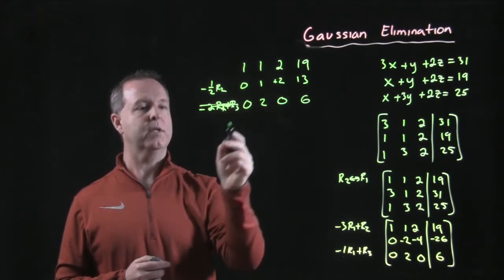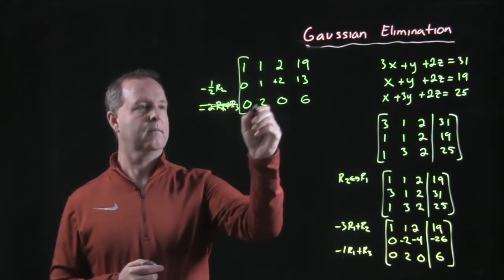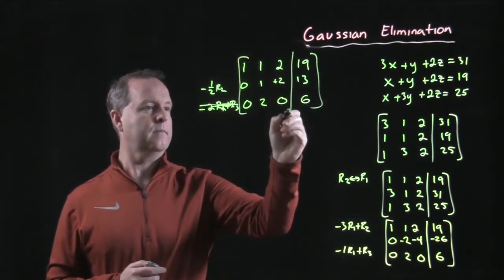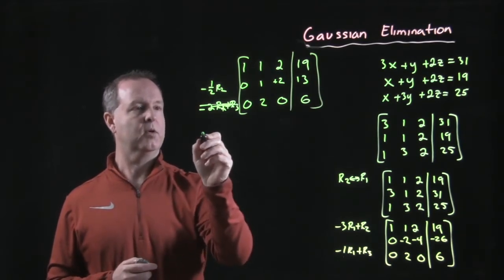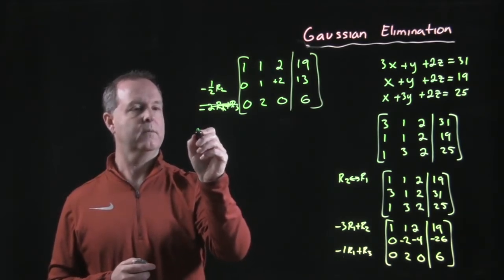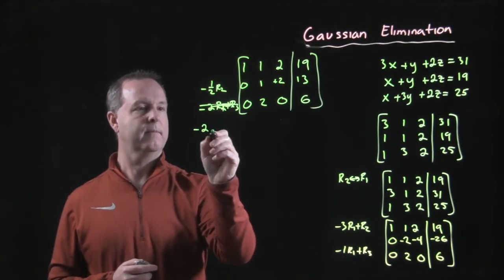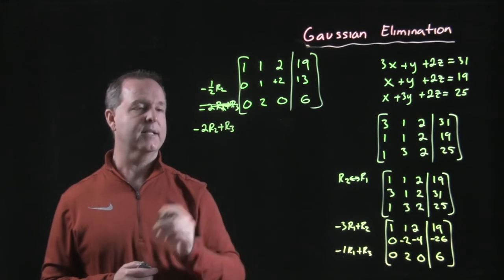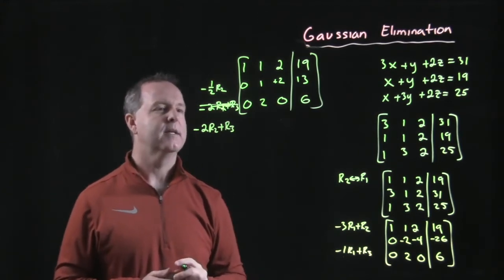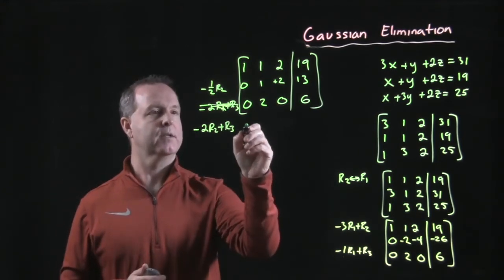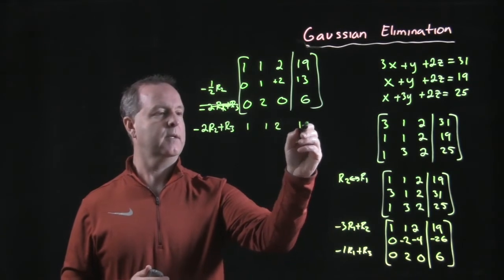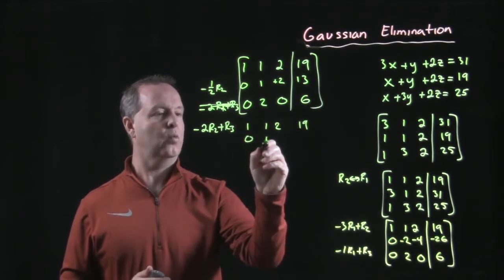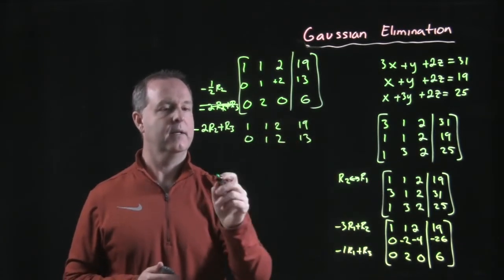Let's multiply row two. So let's multiply row two by negative two and add it to row three. I guess that's what I was wanting to do, but I got a little cramped up there. So one, one, two, 19. Zero, one, two, and 13. All right.